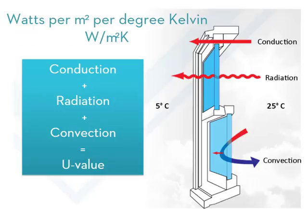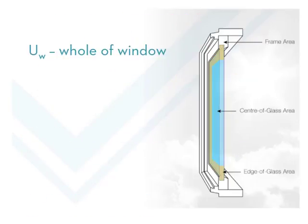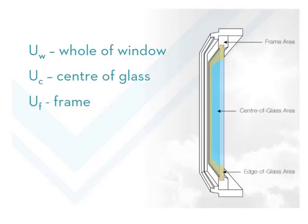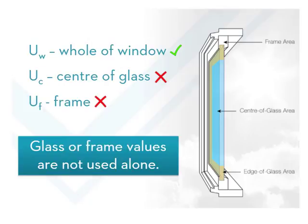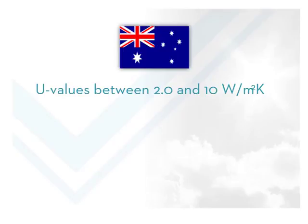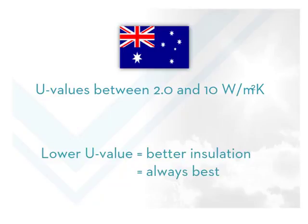U-value is expressed in terms of watts per meter squared per degree Kelvin. The U-value for a window takes into account the various U-values for components making up the window. You can see these abbreviations in technical literature: Uw is the value for the whole window and the only acceptable measurement for use in energy rating programs, often simply abbreviated to U. Uc is the value at the centre of glass, and Uf is the value for the frame. U-value ratings generally fall between 2 and 10 watts per meter squared Kelvin for Australian products. A lower U-value indicates a window's greater resistance to heat flow and therefore a better insulating performance.